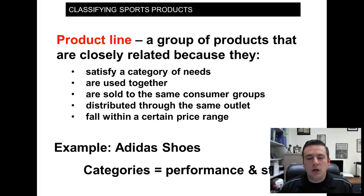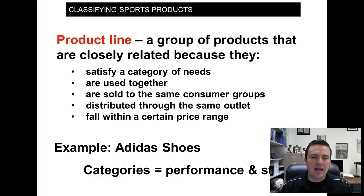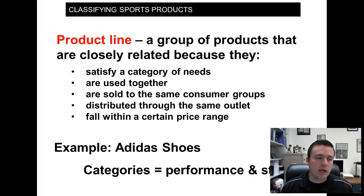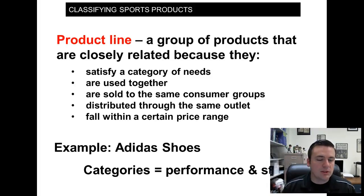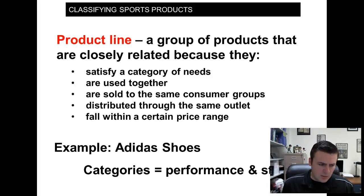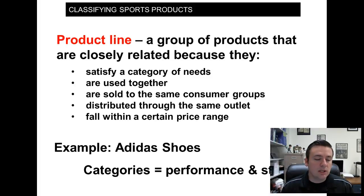The first term is product line — essentially putting a group of different products that are closely related into one group. This categorization occurs when products within that category satisfy some sort of consumer need, are typically used together, and are usually sold to the same consumer group — the same target market — sometimes distributed through the same outlet, and fall within certain price ranges.